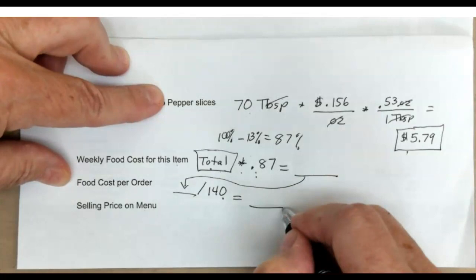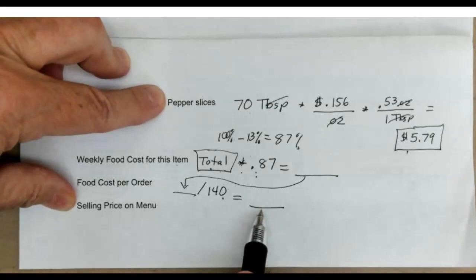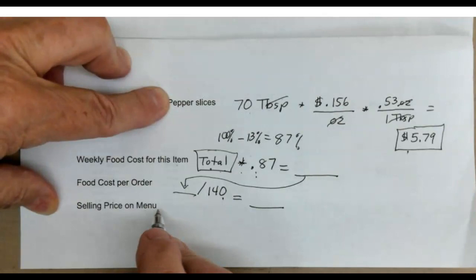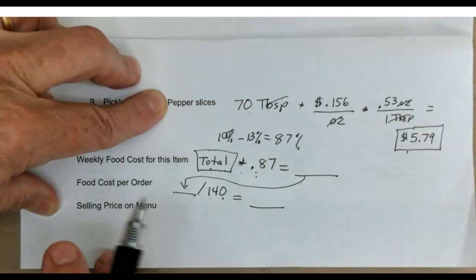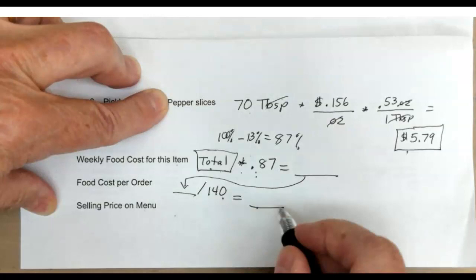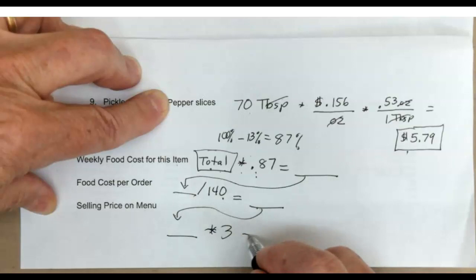You might be surprised how cheap the food part of that mac and cheese order really is. Then the last step is that you're going to determine what your selling price is. According to common restaurant wisdom, what they do is usually take the food cost times three. So you're going to take this answer times three to figure out what your selling price is.